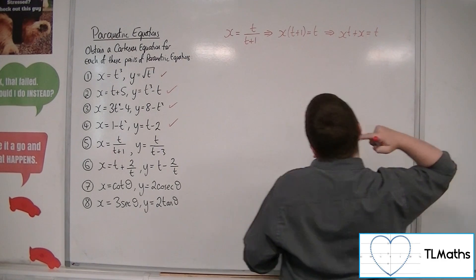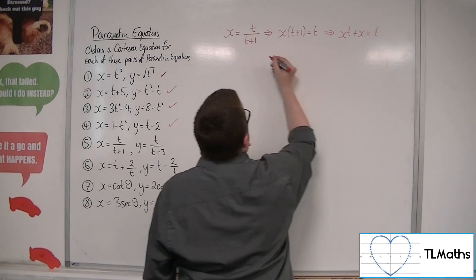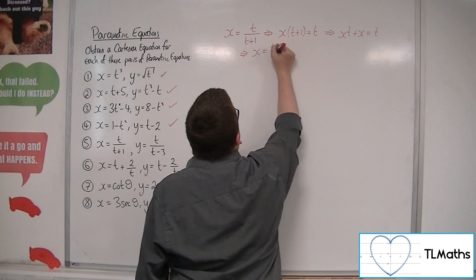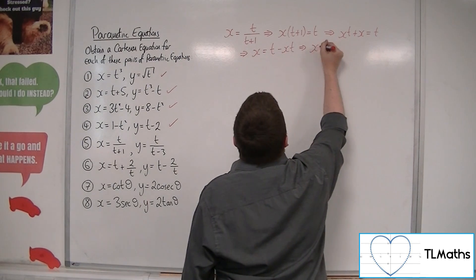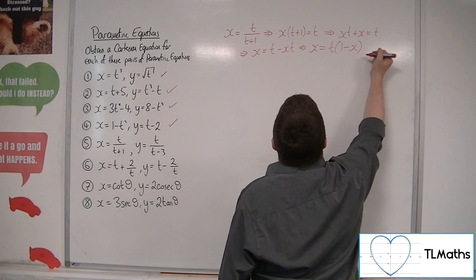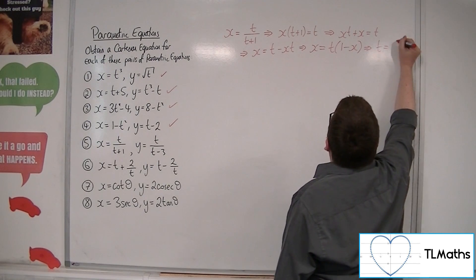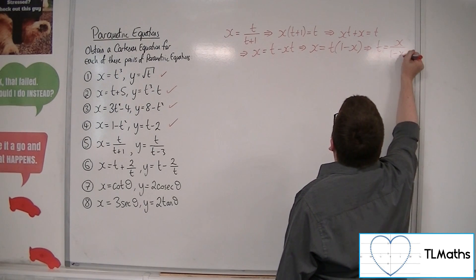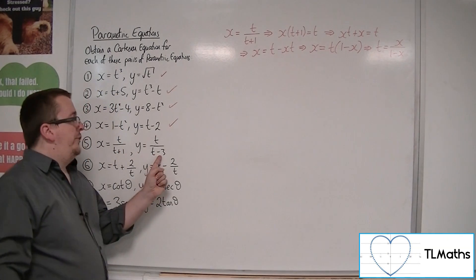I'm going to have to expand that left-hand side. And now I need to isolate the t. So if I take the x, t over to the other side, I'm going to get x is equal to t minus xt. Factorize the right-hand side. So bring the t outside of a bracket and have 1 minus x inside. And then I can rearrange to get t equals x over 1 minus x.